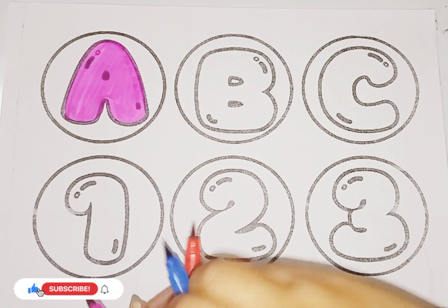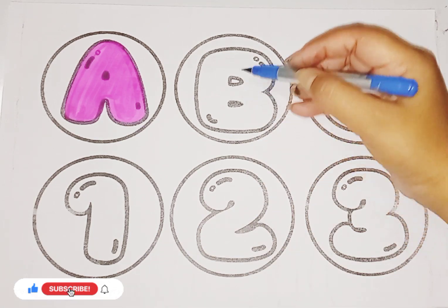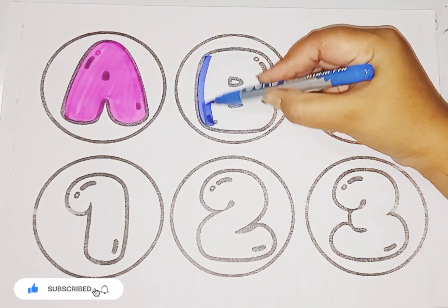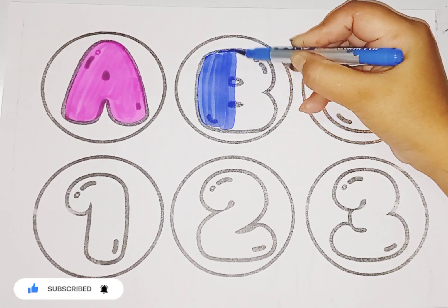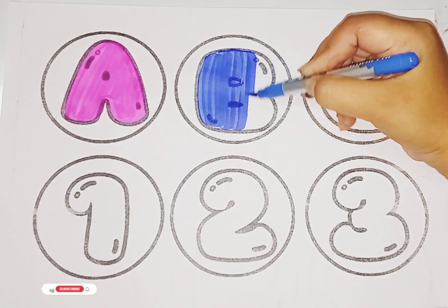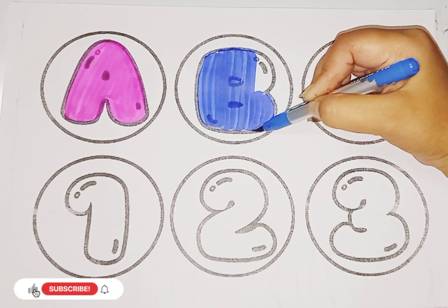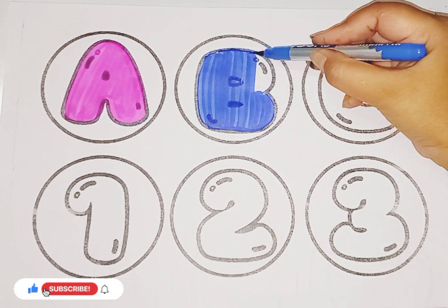Next, letter B. B for bone, B for bed, B for banana, B for butterfly. Letter B.